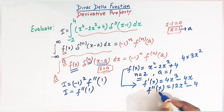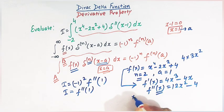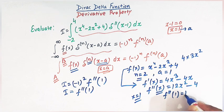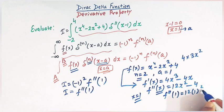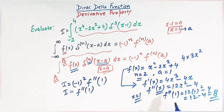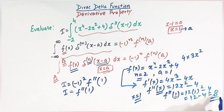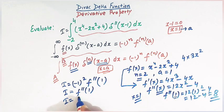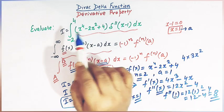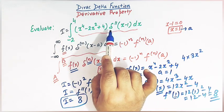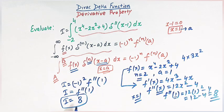Now substituting x equal to 1, we have f double prime of 1 equals 12 times 1 squared minus 4, which equals 12 minus 4, that is 8. So the value of the second derivative of f at the point 1 is 8, and therefore I equals 8. The value of this integral involving the derivative of the Dirac delta function is equal to 8.